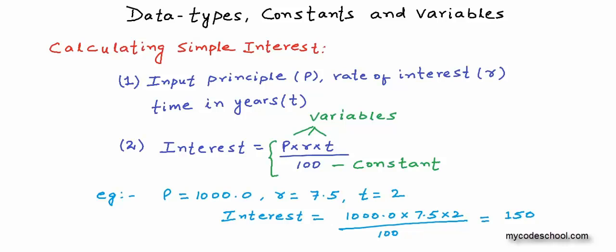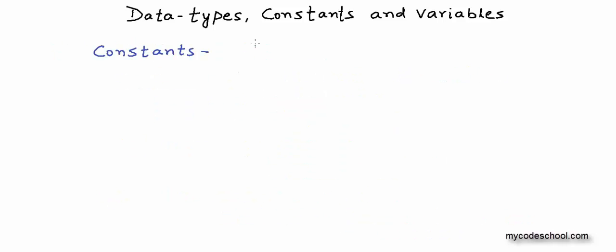We have the concept of constants and variables in programming also. You can think of constants as values of different types that you can write directly in your code. An integer, a real number, a character, or a sequence of characters that we call a string in programming — names, words, phrases, and sentences. In a program, all of these are strings. If we use values for these different types directly in our code, then we call them constants.